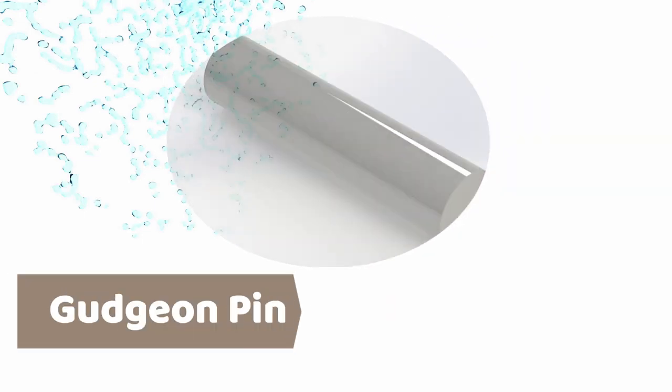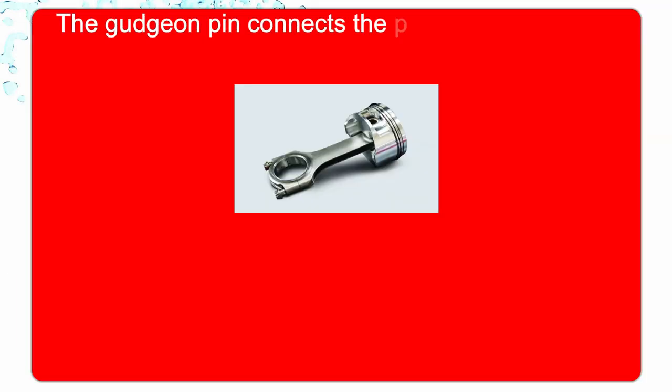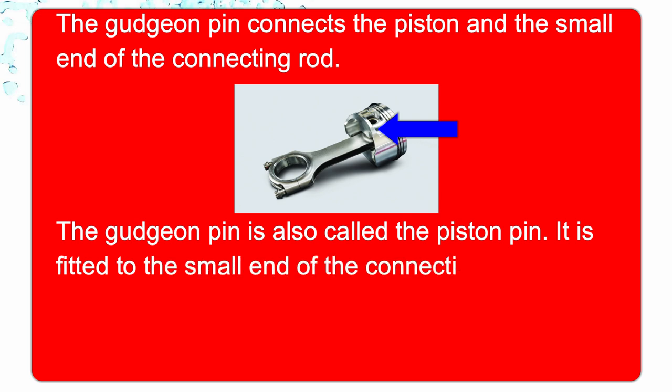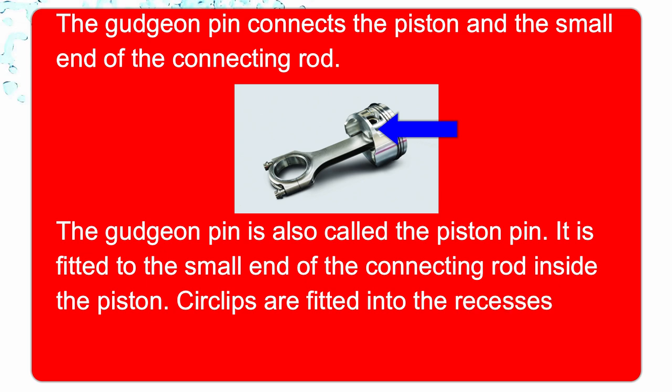Next is gudgeon pin. The gudgeon pin connects the piston and the small end of the connecting rod. The gudgeon pin is also called the piston pin. It is fitted to the small end of the connecting rod inside the piston. Circlips are fitted into the recesses in the piston.